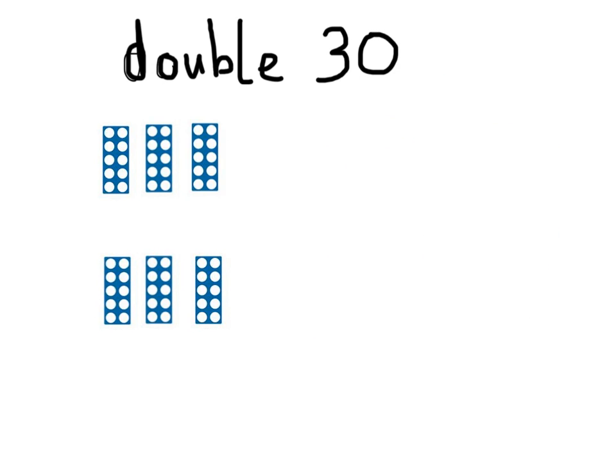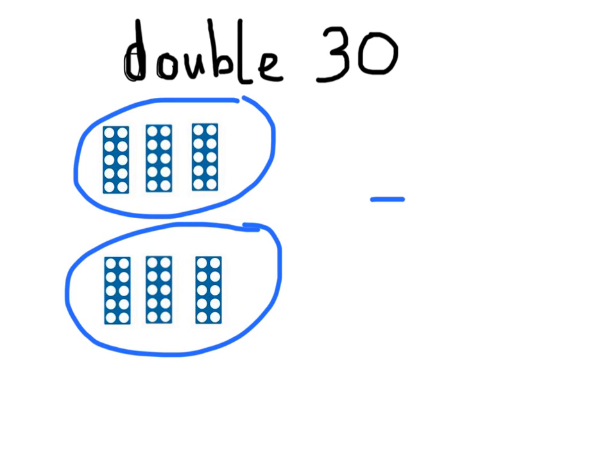What about larger numbers like 30? Well, double 30, you've just got to think of 10s. So if you've got 3 tens and you double it, same principle, you have the same amount again. So that's another 3 tens. That gives you 6 tens, which equals 60.